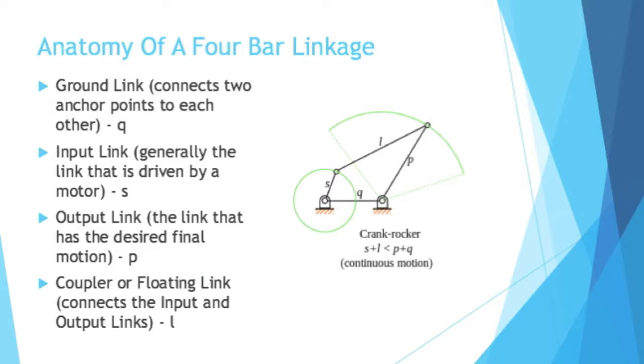You have an input link, which is the one generally driven by a motor. That's represented by S in the image. You have the output link, the link that has the desired final motion. When mechanical engineers or any other type of engineer designs a four-bar linkage in a system, they want some sort of desired motion. The P line, the P link, is going to give that desired motion.